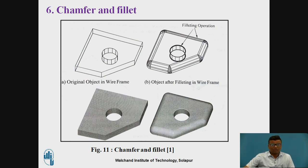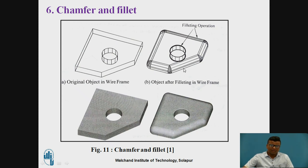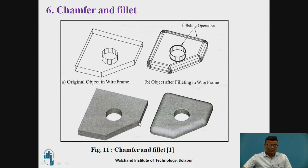Now the chamfer and fillet feature. Suppose you have a rectangle and you want to provide the chamfer — you can provide this chamfer here. Chamfer means there will be an edge slope surface. After that the filleting part — you can provide filleting to different types of edges, which will be a circular fillet. In the 3D view, this will show the chamfering and the different filleting surfaces.